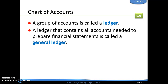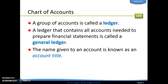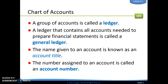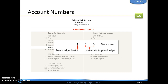When we put a group of these accounts together, we call that a ledger. A general ledger is the ledger that contains all accounts needed to prepare financial statements. The name we give to an account is called an account title, and the number we assign is called the account number. For example, supplies is given the number 150. The first digit, 1, signifies it is an asset — assets are 100 accounts. The next two digits, 50, show where that asset falls within the general ledger division.